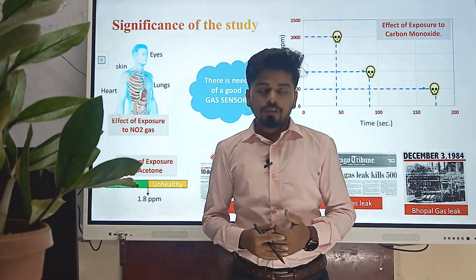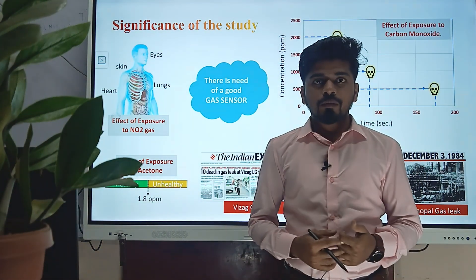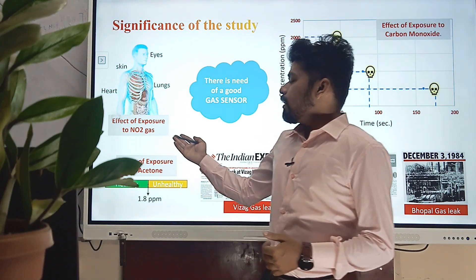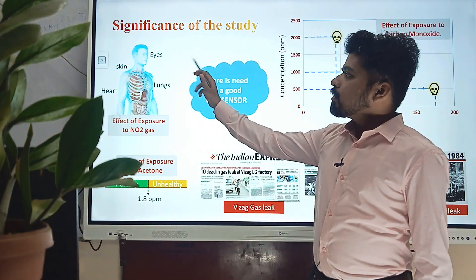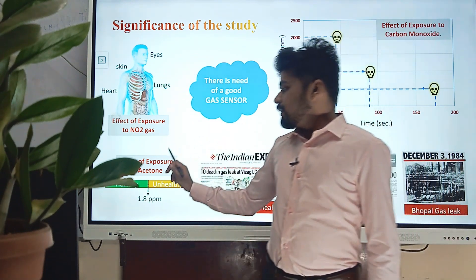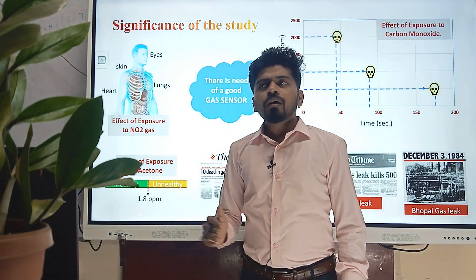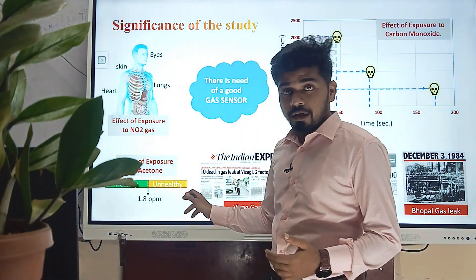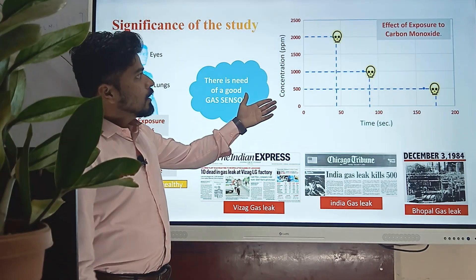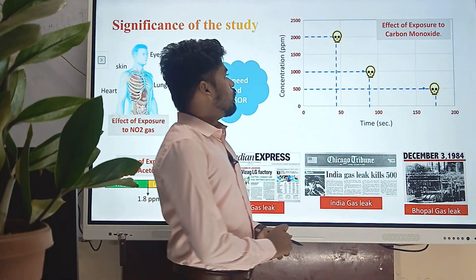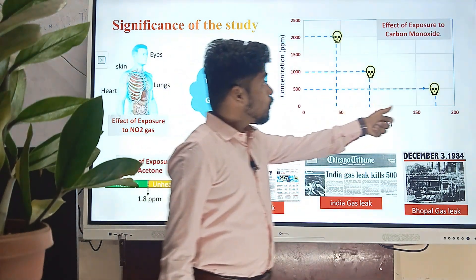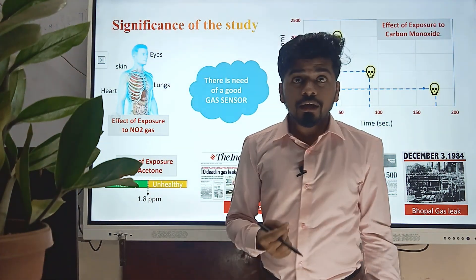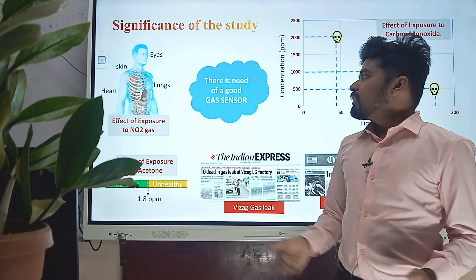The significance of study: due to the industrial revolution, we come across the environmental pollution problem. There are so many toxic gases that need to be detected because they badly affect our body. I have discussed the effect of exposure to NO2 gas, the acetone effect on the body where 1.8 ppm concentration is somewhat non-toxic but beyond it is unhealthy, and the effect of exposure to carbon monoxide, where as concentration increases the time required for death decreases. Newspaper cutouts clearly indicate the seriousness of this problem, so we know there is a need for a good gas sensor.